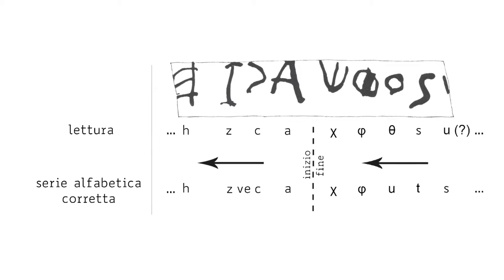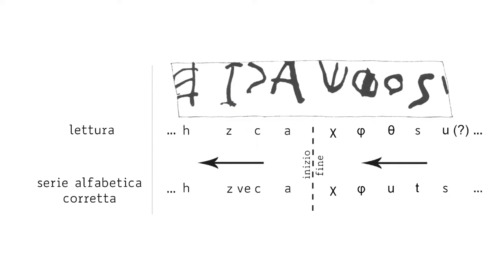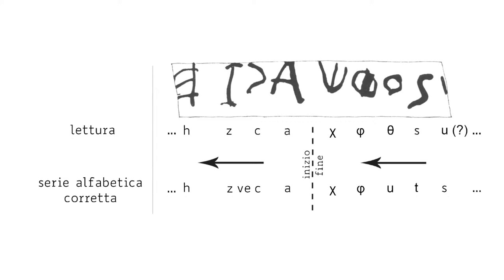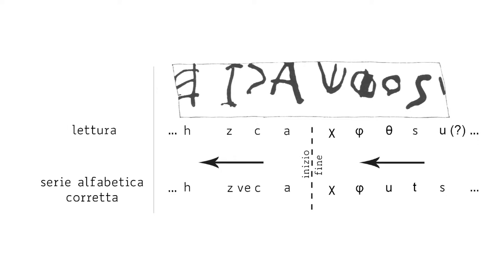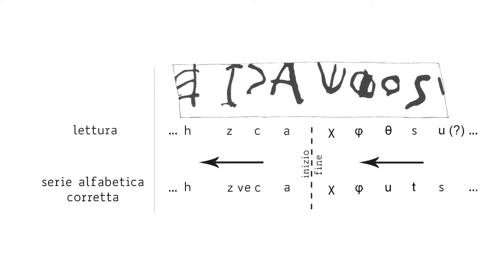If the vase actually belonged to a sacred complex, we must not underestimate the magical value that the alphabetical sequence held, and the general sacred significance of writing for the Etruscans in connection with the gods.